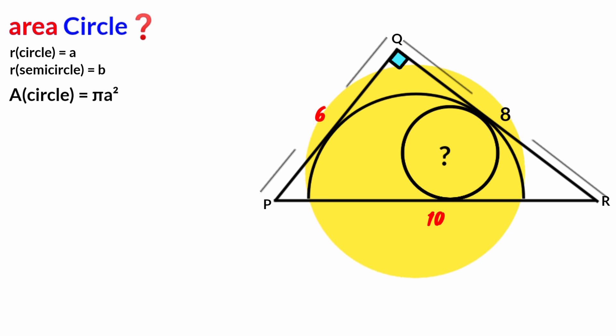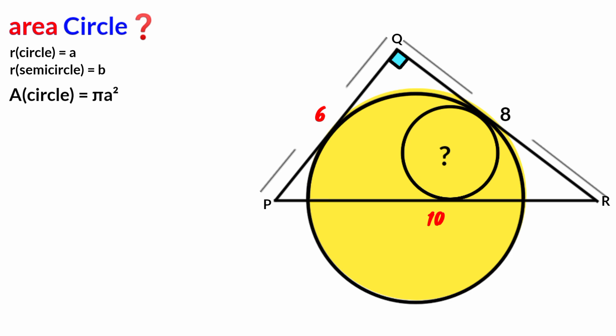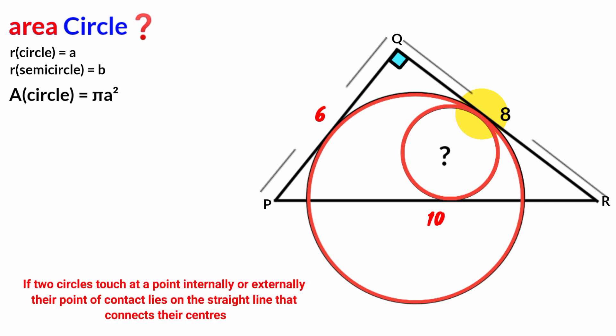Now, we draw out the complete circle from the semicircle. We now have a large circle and a smaller one — they both touch at a point. From circle theory, if two circles touch at a point internally or externally, their point of contact lies on the straight line connecting their centers. Since this line starts from the center of the large circle and ends on the circumference, it is a radius of the large circle, which is P.